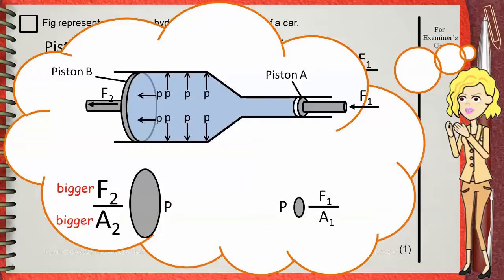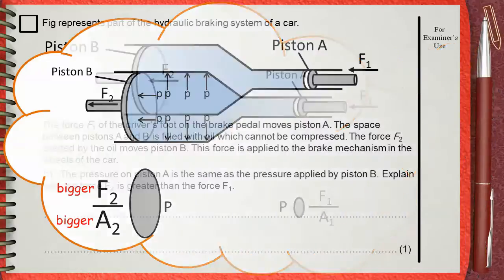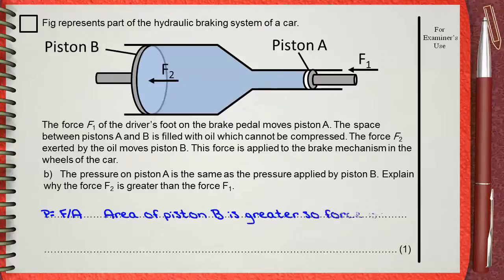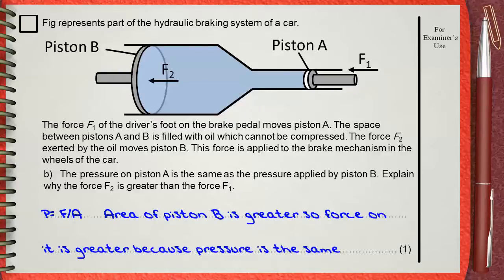This is a ratio — the ratio between F1 and F2 is the same as the ratio of area 1 to area 2. So when asked for an explanation of why force F2 is greater than force F1, we can answer: pressure equals force over area; the area of piston B is greater, so the force on it will be greater, because the pressure is the same.